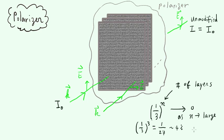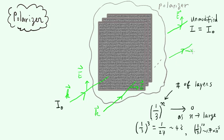If you have n equals about 10 layers — which is not too many compared to three — what you get is about 1.7 × 10⁻⁵. That's a very small number; for all practical purposes that's zero for a polarizer in practical use. So when you have many layers like this, you can set it up so that when the polarization is parallel to these molecular directions, the intensity is effectively zero — you don't get any light.